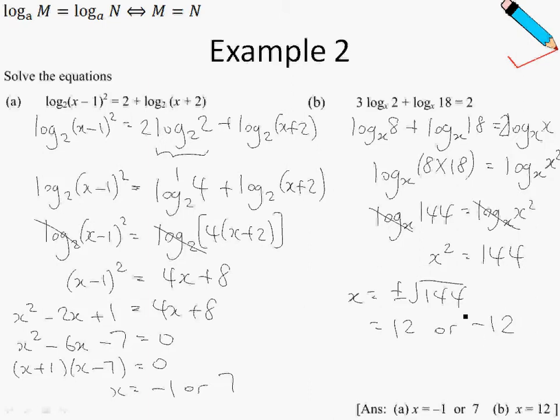Take note that negative 12 is rejected because in the previous laws that we learned, the conditions for logarithm, the base of any logarithm can never, or rather must always be positive. So negative 12 is rejected. So my final answer is just x equals to 12.